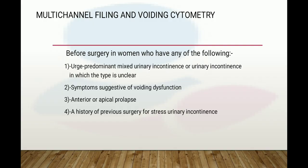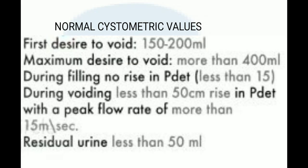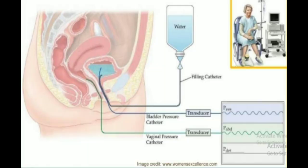Multichannel filling and voiding cystometry is indicated before surgery in women with urge-predominant mixed urinary incontinence, incontinence of unclear type, voiding dysfunction, anterior or apical prolapse, or history of previous surgery for stress urinary incontinence. Normal cystometric values are: first desire to void at 150–200 ml, maximum desire to void at more than 400 ml, no rise in detrusor pressure during filling (less than 15 cmH₂O), and during voiding a detrusor pressure rise with a flow rate greater than 15 ml/second and residual volume less than 50 ml.